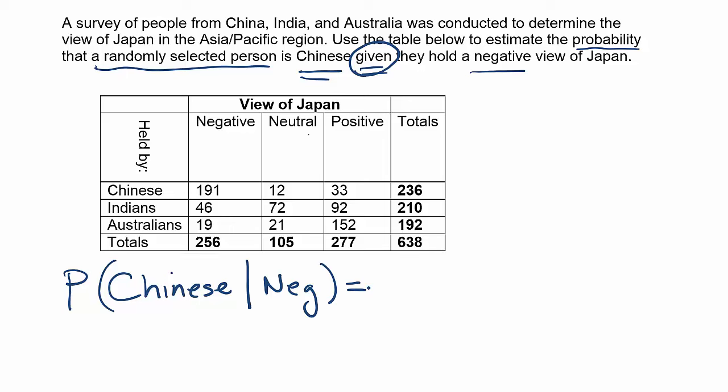It turns out when we're dealing with conditional probability and they give us a table of data like this, it's actually very easy to solve the problem without using the formula formally, because it'll just slow us down and make things more cumbersome.